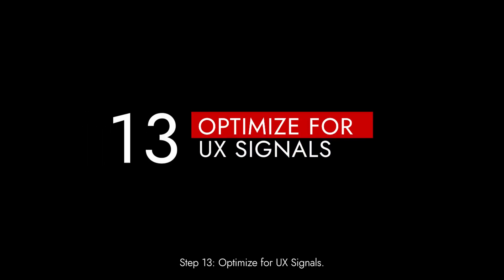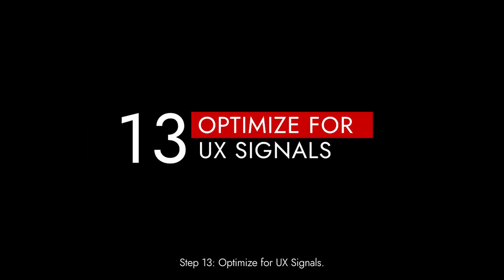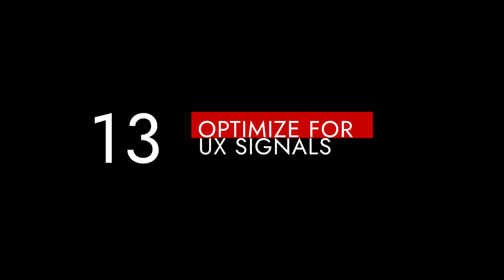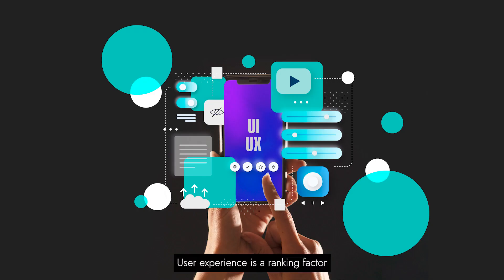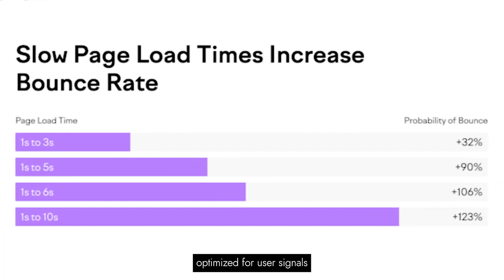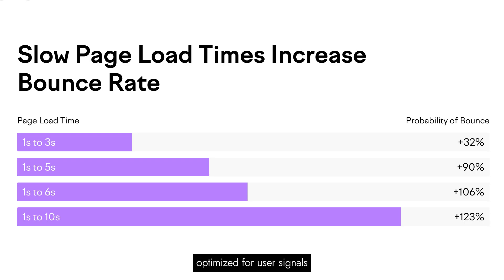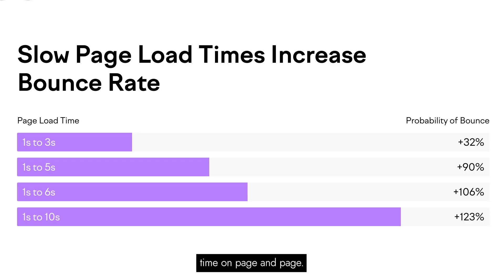Step 13: Optimize for UX signals. User experience is a ranking factor. Optimize for user signals like bounce rate, time on page, and page loading speed to enhance the overall user experience.